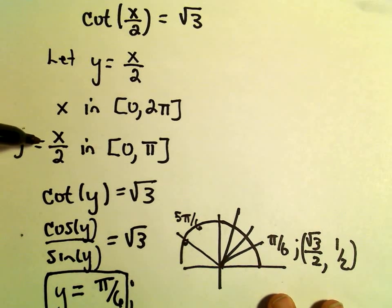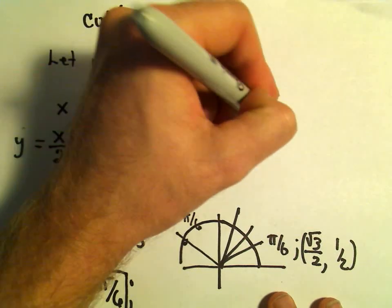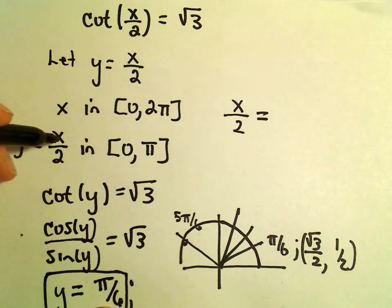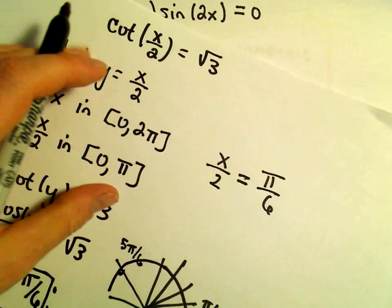But we said y is the same thing as x over 2. So since y equals pi over 6, that means x over 2 would have to equal pi over 6.